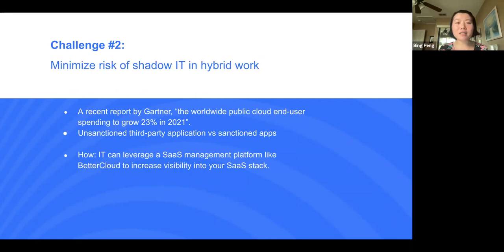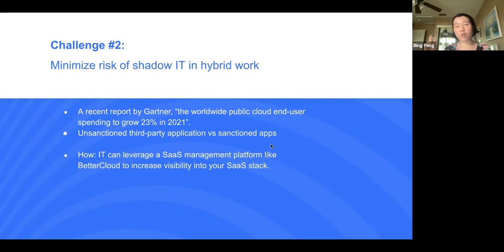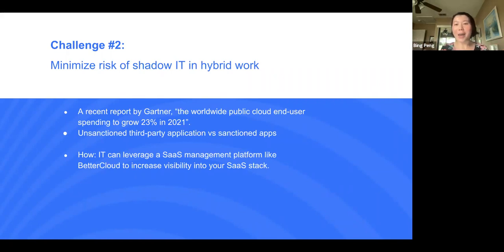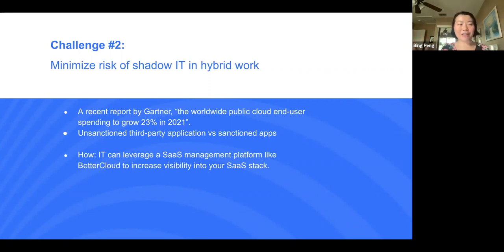For the second challenge: minimizing the risk of shadow IT in a hybrid work environment. Shadow IT is when you purchase any software without IT permission. A recent Gartner report told us worldwide public cloud spending is going to grow 23% in 2021, so you'll see a lot of unsanctioned third-party applications appearing in IT environments. My company can provide a solution that gives IT admins greater visibility into their IT environment — how many applications are in their space, which are unsanctioned versus sanctioned — and ultimately helps manage them.